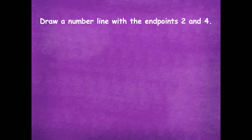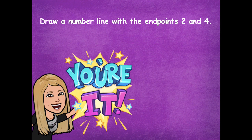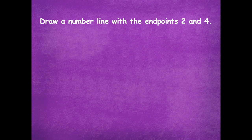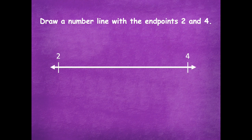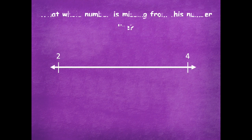Awesome. Now we're going to draw a number line with the endpoints of two and four. Pause the video, draw your number line with endpoints of two and four, and then click play when you're ready for the next step. Here's my number line between two and four. What whole number is missing from this number line? We're not just going to go from two to four — there's something that goes in between. What's missing? Three.